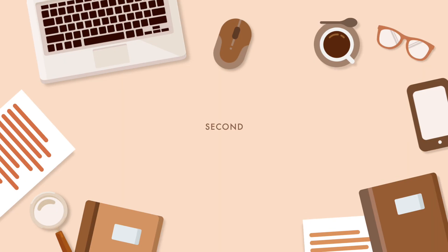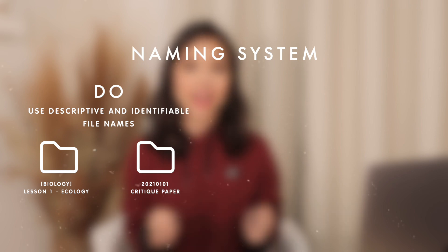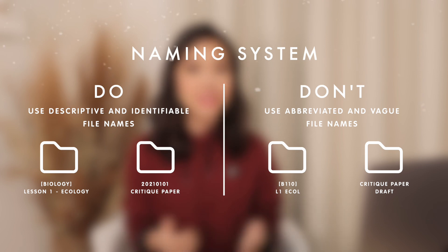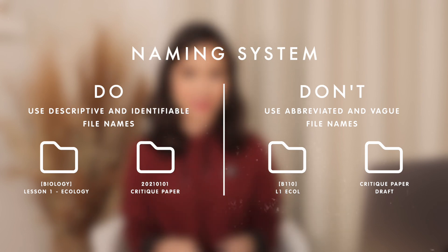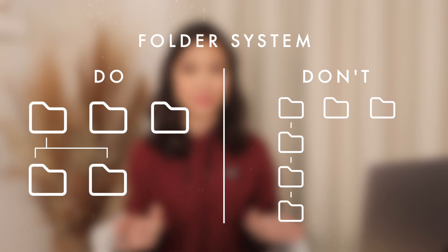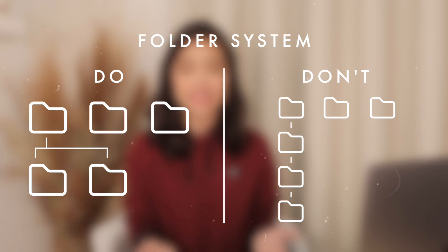Second is to organize your files. Take the time to sit down, go through all your files, rename them, and move them into their corresponding folders. Set up a useful naming system and be as descriptive as you can — using abbreviations can only lead to confusion, so make sure you name your files correctly as soon as you create them. Your naming system should help you navigate and search for your files easier and faster.